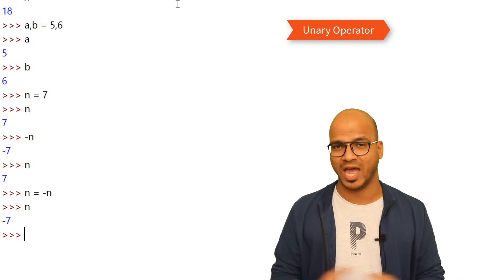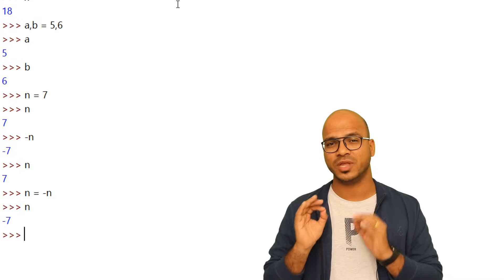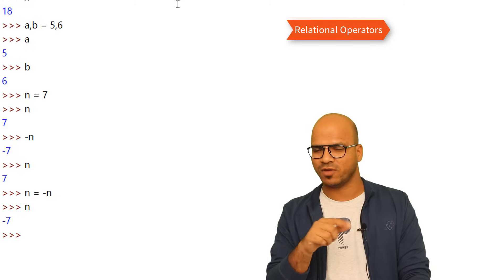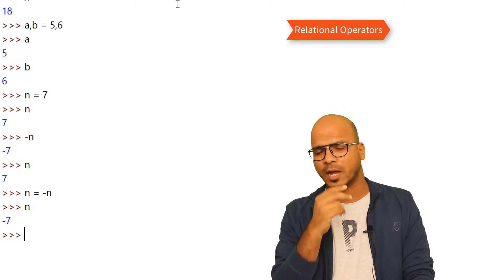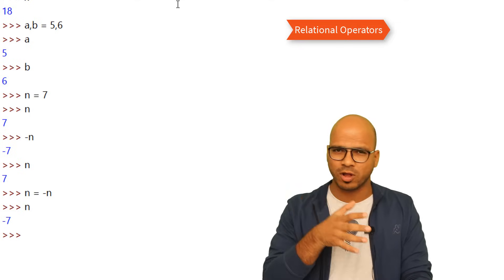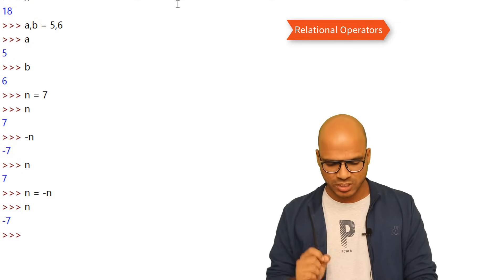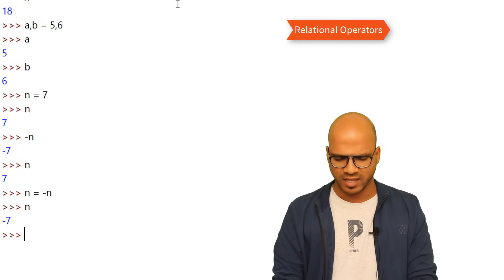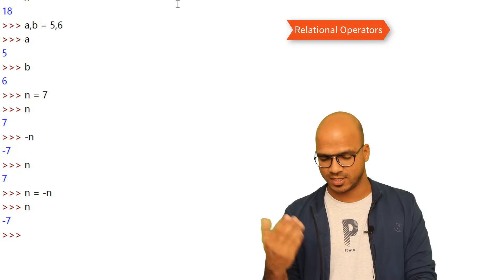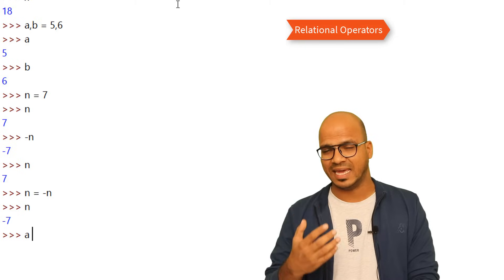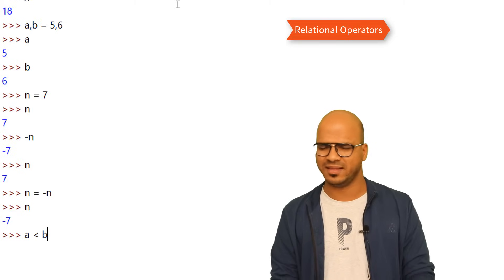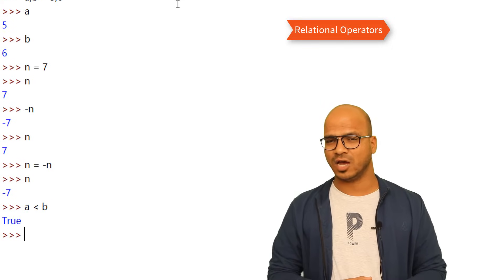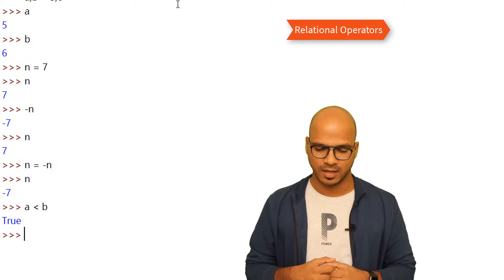The next two are relational operators and logical operators. Let's start with relational. With a equal to 5 and b equal to 6, you can check if a is less than b — the answer is true. These comparisons return a boolean true or false, which we've seen before.